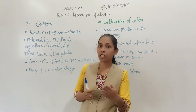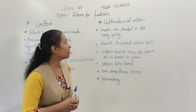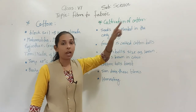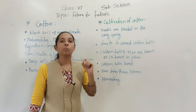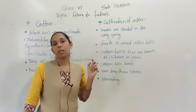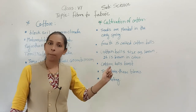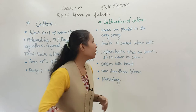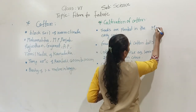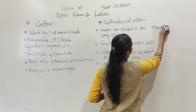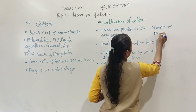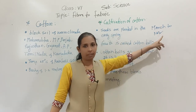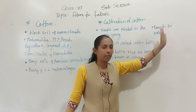Now let us look at the cultivation of cotton — how exactly we get cotton fibers from the cotton plant. In India, the growing period for the cotton plant is March to November, which is from spring to winter.